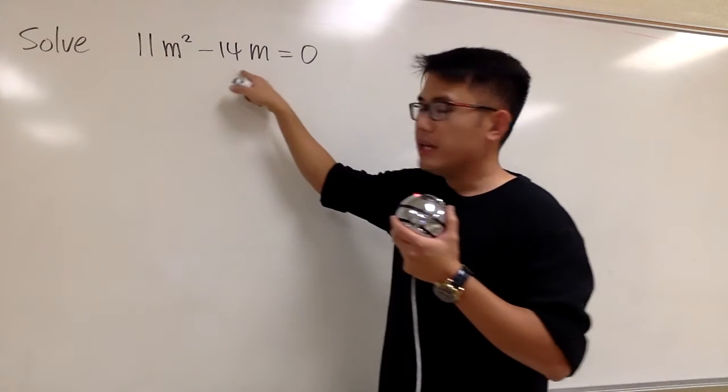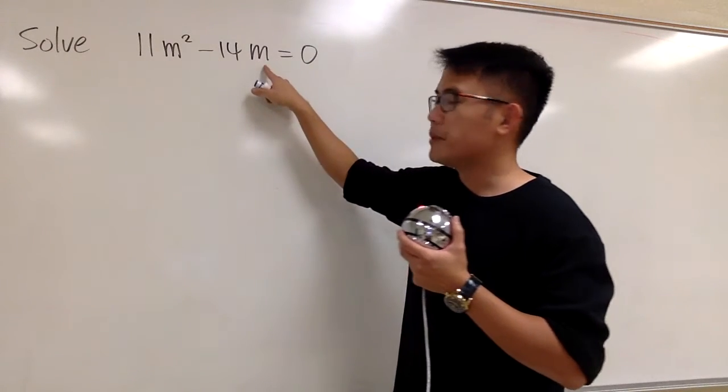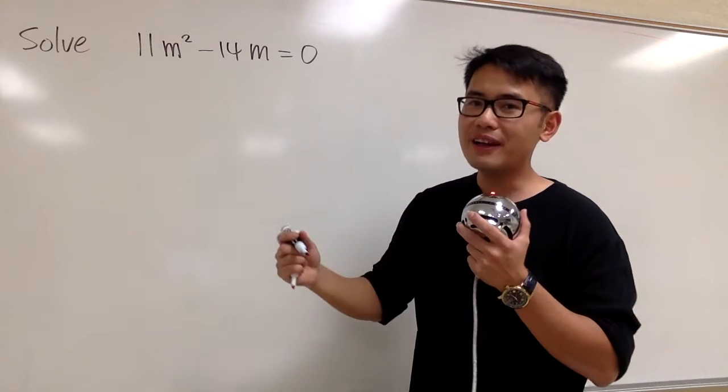So, by looking at this right here, we have the m squared here and the m here. We can first factor out an m.